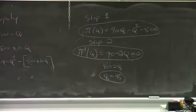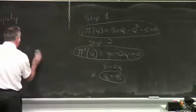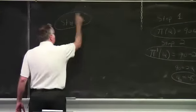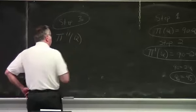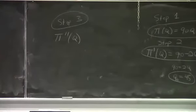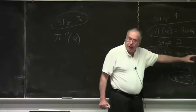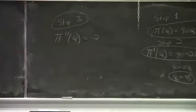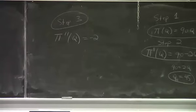Take the second derivative. And in this case, what is the second derivative? The second derivative of the objective function. Negative two. You just go to this first derivative, 90 minus 2q, differentiate that one more time, and we just get minus two.